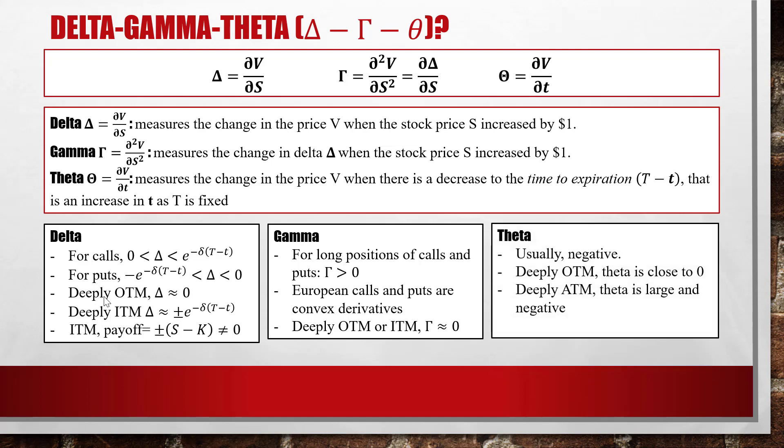For Theta: Theta is negative. If an option is deeply OTM then Theta is very close to zero, because V is close to zero and the derivative of V with respect to t is also close to zero. If it is deeply in the money, Theta is large and negative.